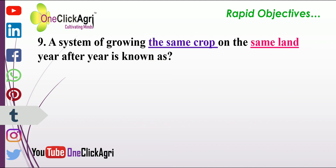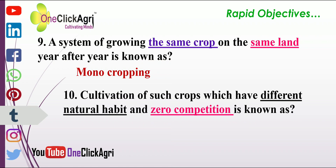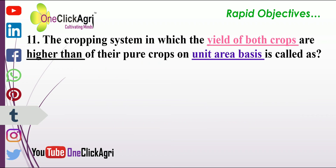A system of growing the same crop on the same land year after year is known as mono cropping. Cultivation of crops which have different natural habits and zero competition is known as parallel cropping. The cropping system in which the yield of both crops is higher than their pure crops on a unit area basis is called synergetic cropping.